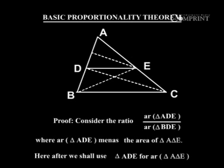Area of triangle ADE by area of triangle BDE, where area of triangle ADE means the area of triangle ADE. Hereafter we shall use triangle ADE for area of triangle ADE.